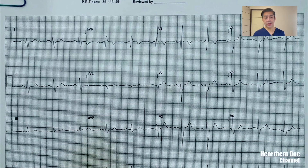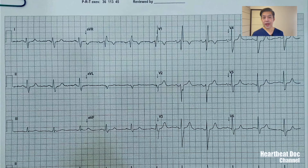Now let's go back to the ECG tracing I showed you and examine the computer's ECG interpretation. The computer read it as sinus rhythm. We examined lead 2 — it is upright in that lead, also upright in leads 1, AVL, V4, V5, and V6, and biphasic in lead V1. All of them support that this is, in fact, a sinus rhythm.